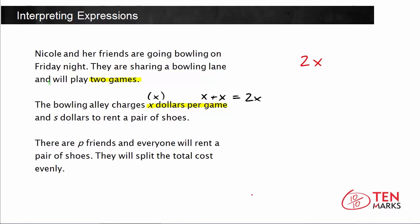Now, what else do we need to know? We need to know that the bowling alley charges S dollars to rent a pair of shoes, and each person needs a pair of shoes. Well, how many people are there? So what would the cost for everyone's shoes be? There are P friends, and each pair of shoes costs S dollars. So how can we represent that?